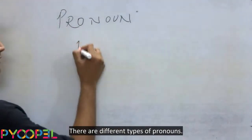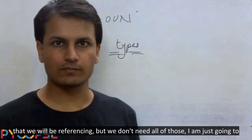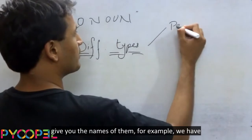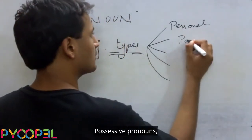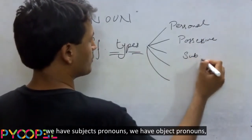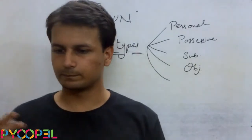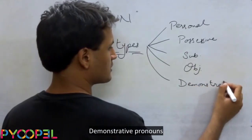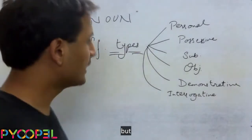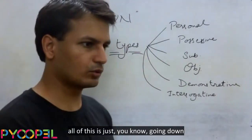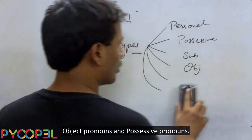There are different types of pronouns. When you go into the whole detail, there will be a lot of types — personal pronouns, possessive pronouns, subject pronouns, object pronouns, demonstrative pronouns, interrogative pronouns, and many other varieties. But we don't need all of those. Let's focus on the three major types: subject pronouns, object pronouns, and possessive pronouns.